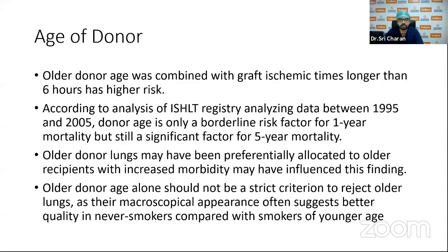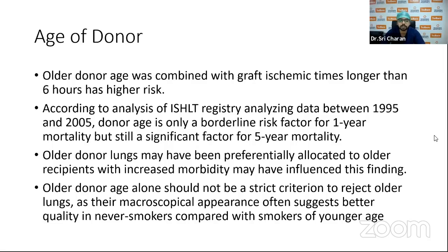Older donor age combined with ischemic times longer than six hours confers higher risk. According to ISHLT registry analysis between 1995 and 2005, donor age is only a borderline risk factor. However, when combined with increased graft ischemic times, older donor age poses higher risks. There may be confounding bias in this data as older donor lungs may have been preferentially allocated to older recipients with increased morbidity. Older donor age alone is not a criterion to reject older lungs, as their macroscopic appearance often suggests better quality in non-smokers or younger smokers.